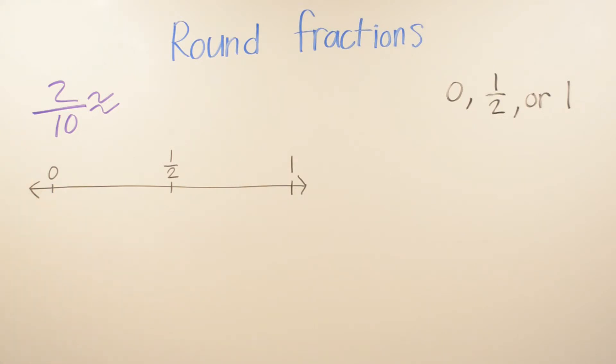In this example we have 2 over 10. So we're going to round it—it's either going to be 0, 1 half, or 1. You can go ahead and graph it to start off, and I would go ahead right away and put what's the half of 10, so it will be 5 over 10.